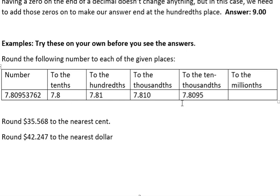And to the millionths: the millionths is six places out - one, two, three, four, five, six. There's the seven. Look one to the right, that's a six, so the seven would go up to eight. We would end up with 7.809538, and we would stop there. No trailing zeros.